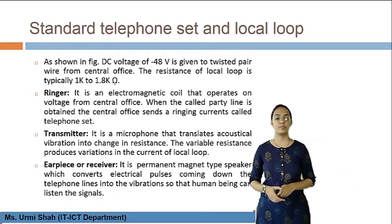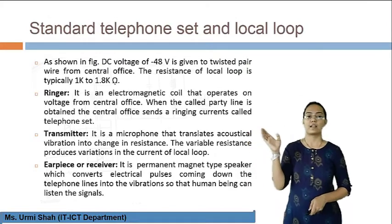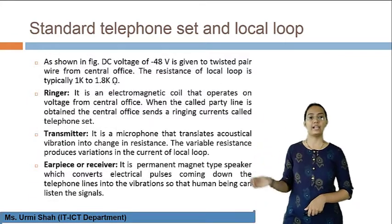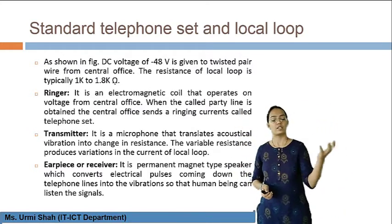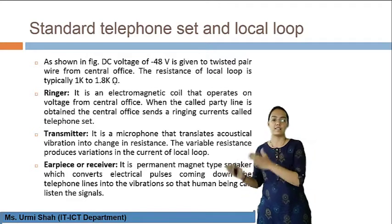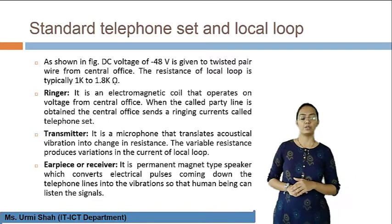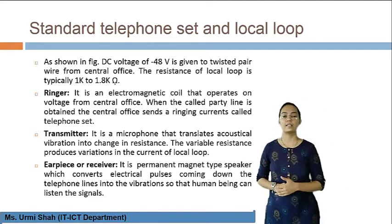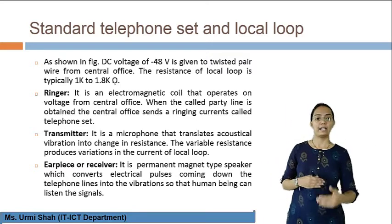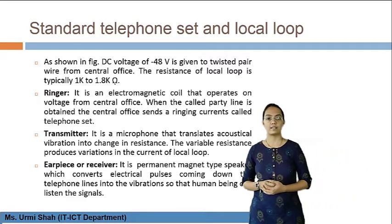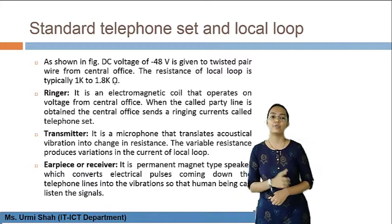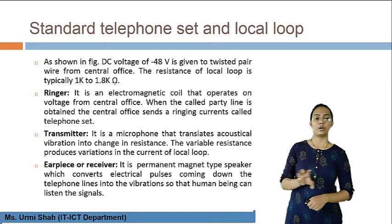The ringer coil operates on minus 48 volts directly from the central office, and the central office sends ringing current to the telephone set. The transmitter passes signals from one block to the receiver block while handling acoustical vibrations or changes in resistance. The variable resistance produced during vibrations affects the current of the local loop system.